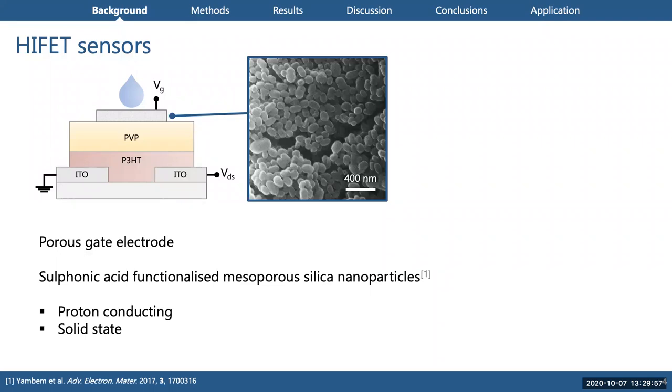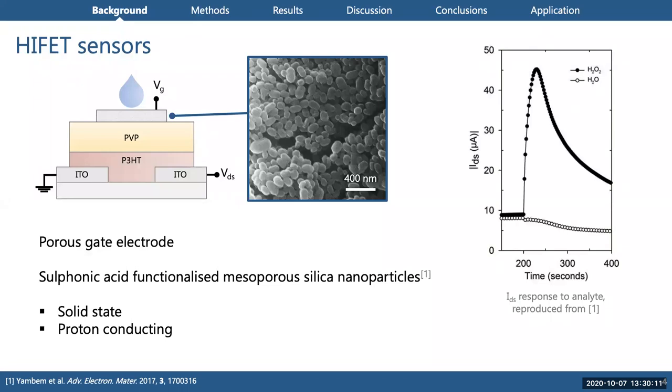Our research group has previously reported a HIFET proton sensor that uses sulfonic acid functionalized mesoporous silicon nanoparticles. These are a highly proton-conducting solid-state material, and this is due to the moisture trapping properties of the functionalized pore structure, so you can get protons hopping along the trapped moisture. These devices did make quite promising sensors.